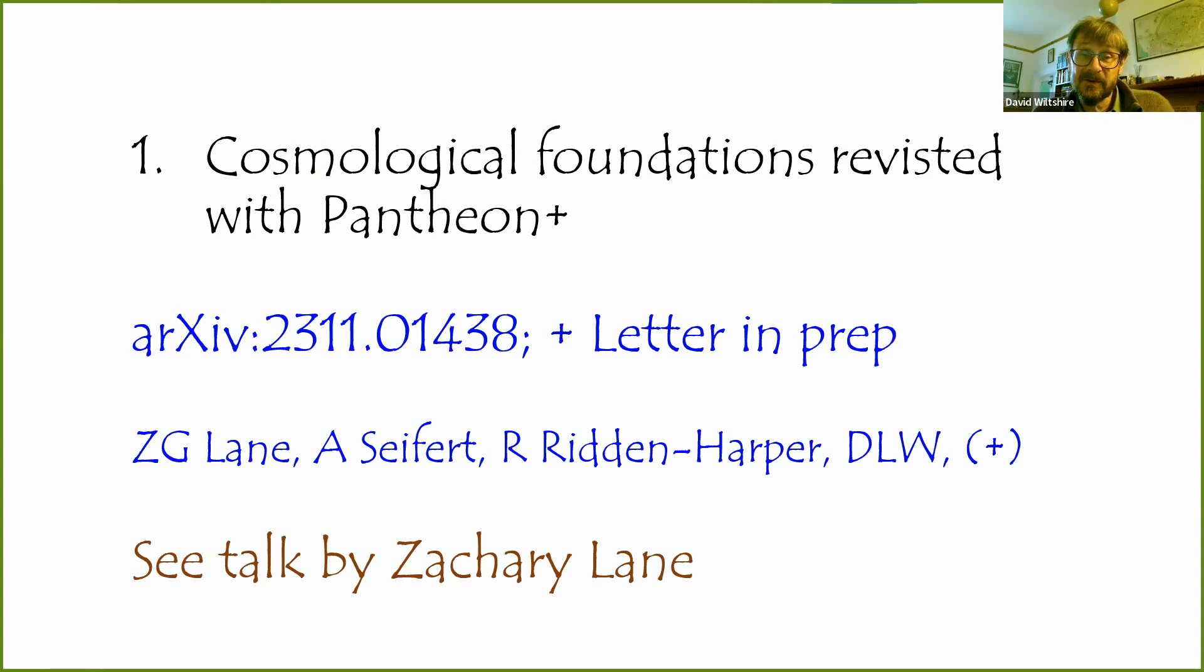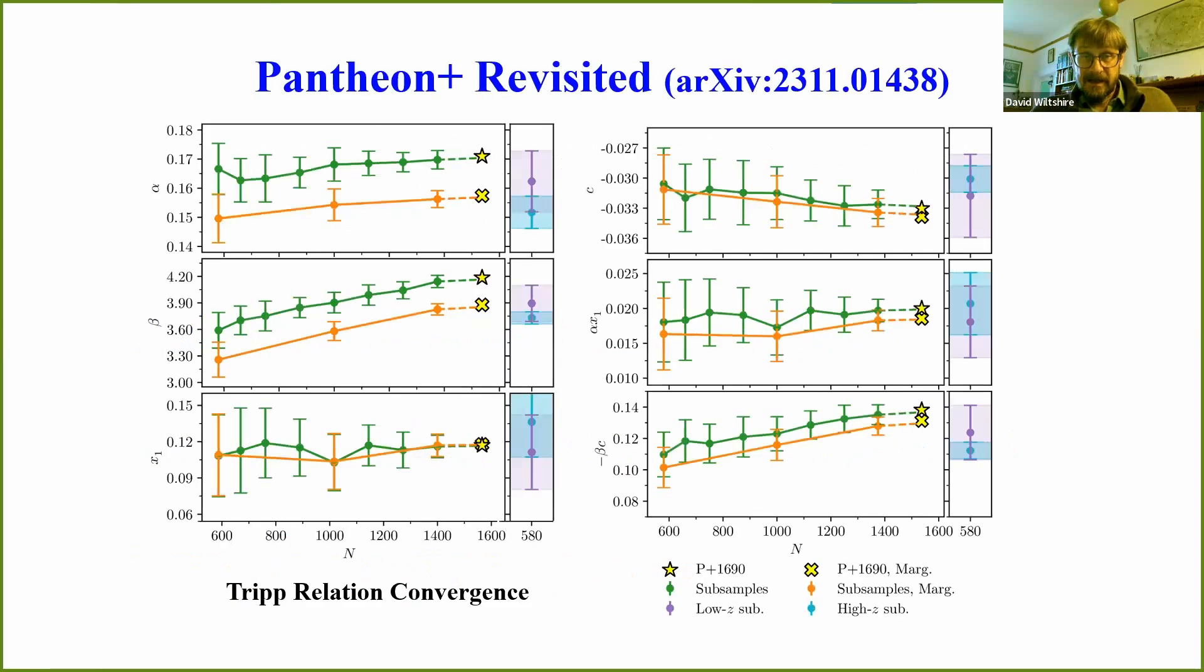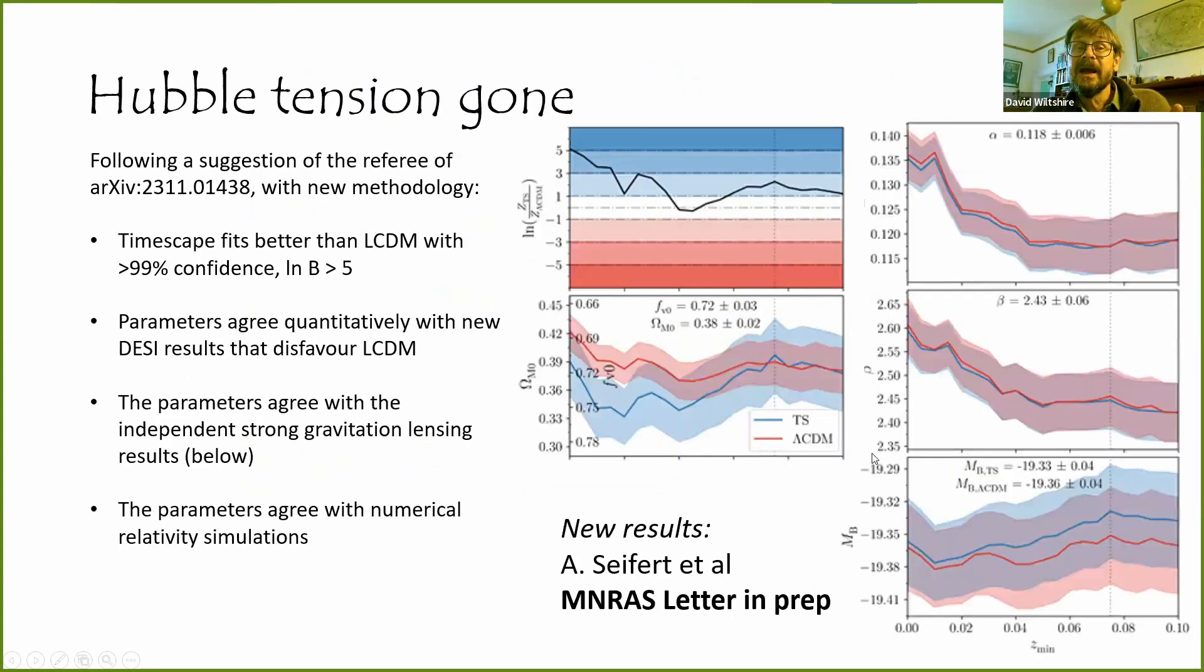Zach Lane is going to talk more about the Pantheon Plus data, so I'm not going to go into all of that. An important thing is that you can see from bootstrapped resampling that with regular methods that things do not converge, and that's the Hubble tension.